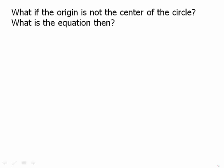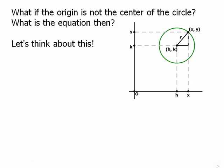Now we can ask: what if the origin is not the center of the circle? What is the equation if we have a circle centered somewhere else in the coordinate plane? We'll have a circle centered at some general point — the center is (h, k) with a radius of r — and we want to know the equation of that circle.